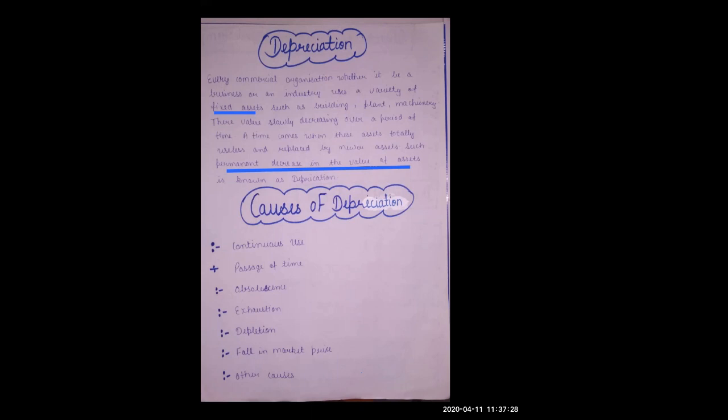Third, the auditor must verify the useful life of the asset — checking whether the useful life the company has shown is correct or not. Fourth, the auditor must check any change in the method of depreciation — if a company changes their depreciation method, the auditor checks whether the change has been properly disclosed.